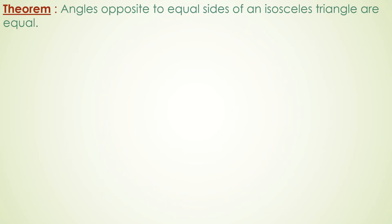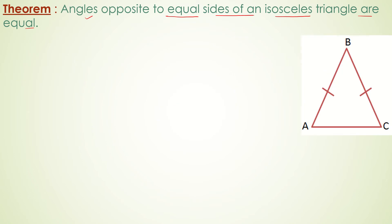The first theorem, or the first property, is that the angles opposite to equal sides of an isosceles triangle are equal. In this triangle, side AB is equal to side BC, and we have to prove that angle A is equal to angle C.